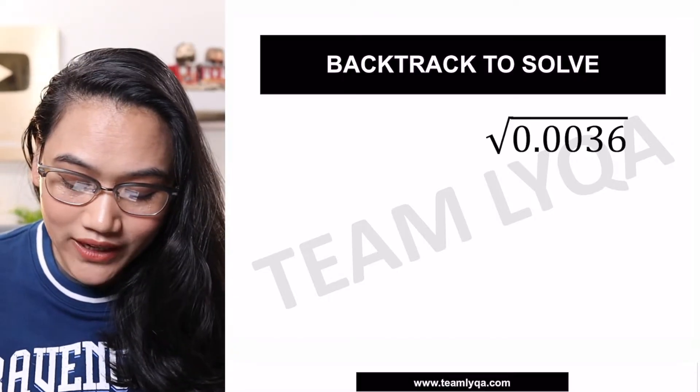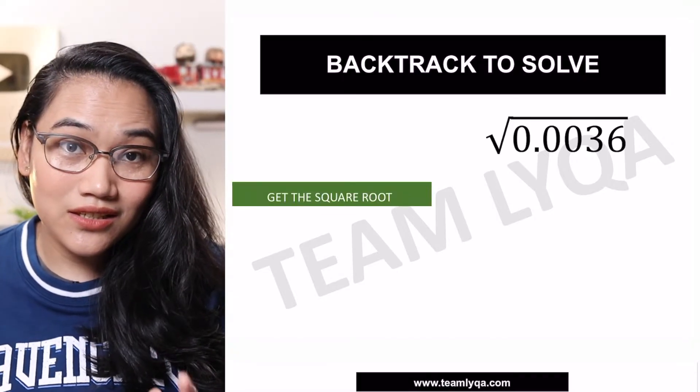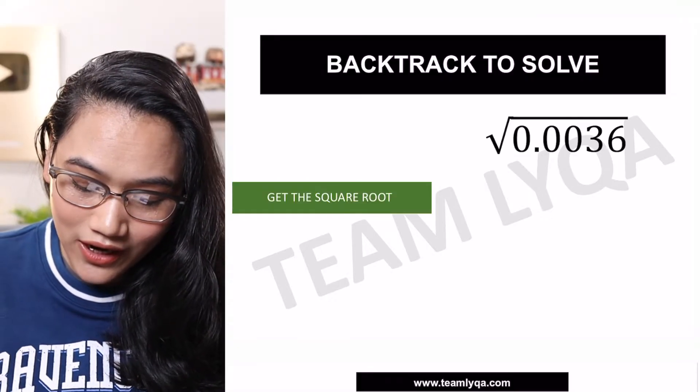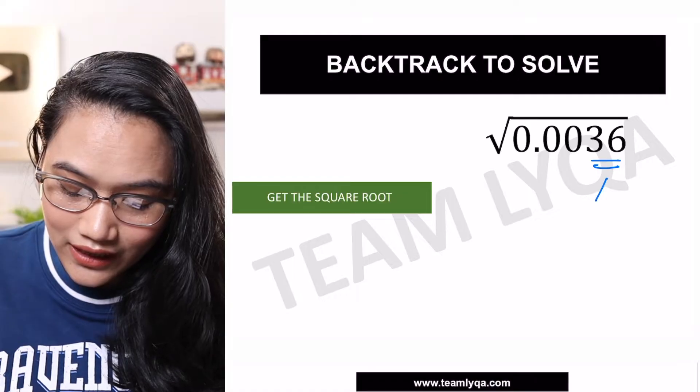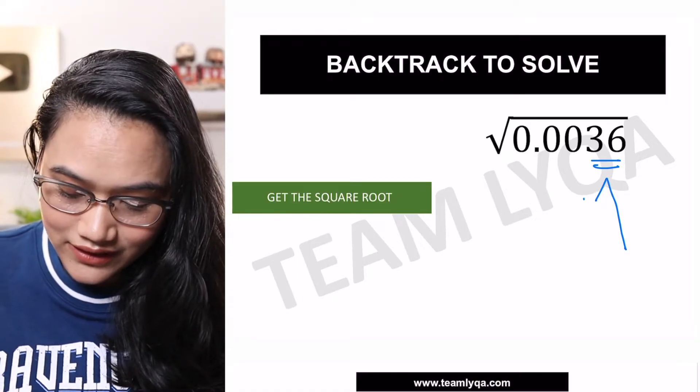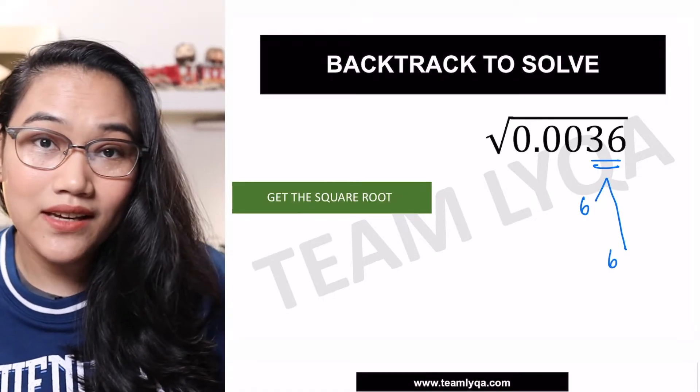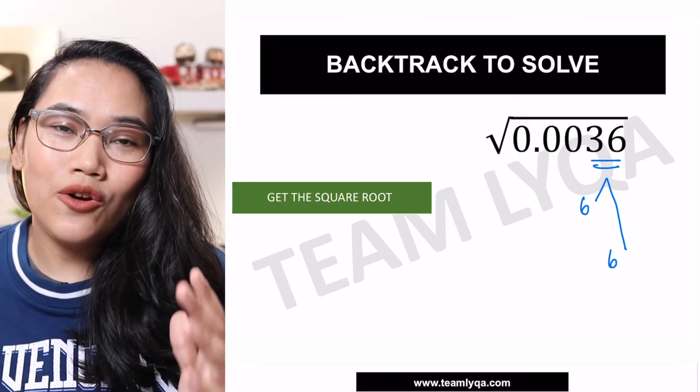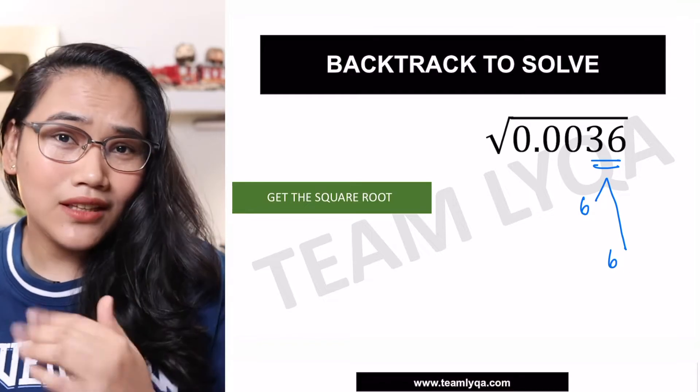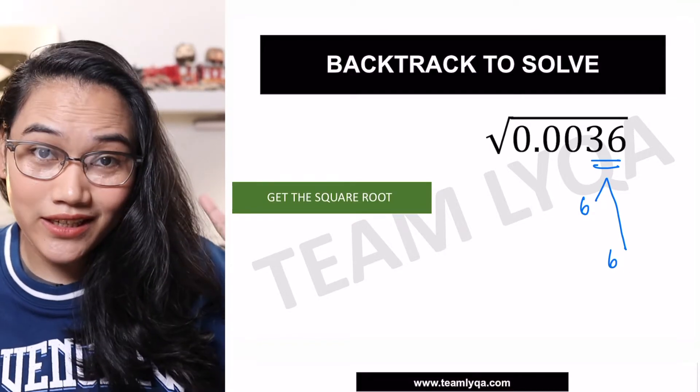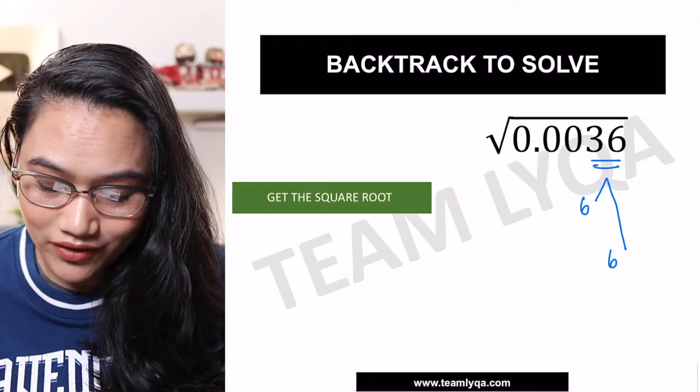Now, how do we do that? First of all, we're going to get the square root of the digits in that decimal. In this case, you have 36, which if we get the square root is two 6s. 6 times 6 is 36. If you're not familiar with factoring or ways to get the square root of a number, we have a full series on radicals. I'll link it here and below.